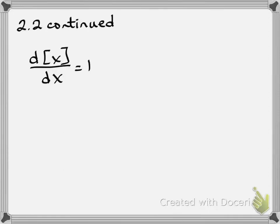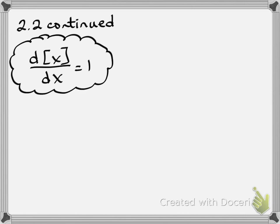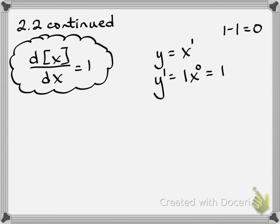Good morning. We're going to continue taking notes on section 2-2 that we started Friday. This is a special rule: if you take the derivative of x with respect to x, it's just 1. We can verify this with the power rule — if y equals x, bring the power of 1 down to the front, and x to the 1 minus 1 is x to the 0, which is 1. So generally, the derivative of just an x term is 1.